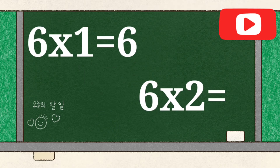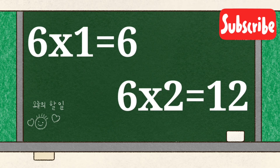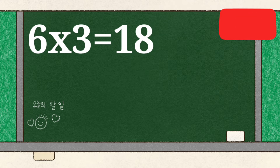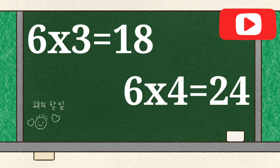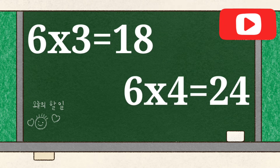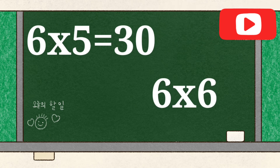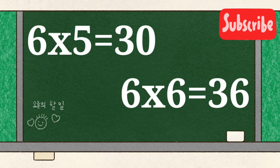6 1's are 6, 6 2's are 12, 6 3's are 18, 6 4's are 24, 6 5's are 30, 6 6's are 36,